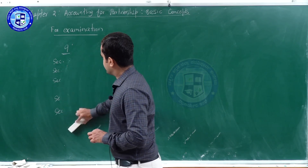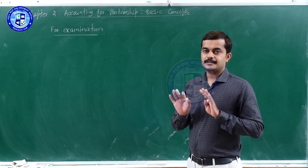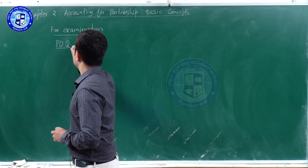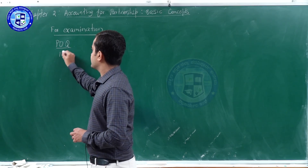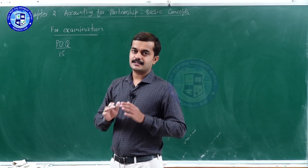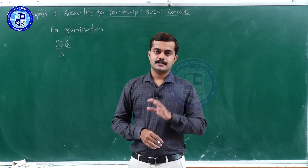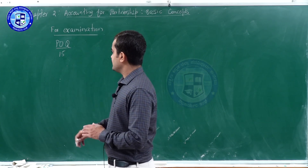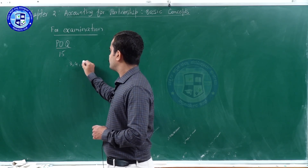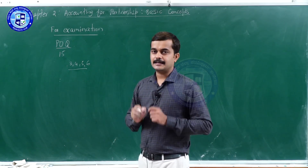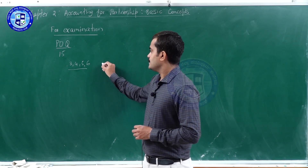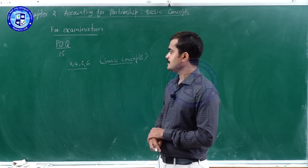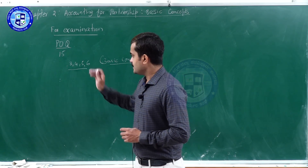After looking at all these different sections, we will now go to practical oriented questions. There are a total of 15 practical oriented questions which can be asked from all chapters in the Second PUC Accountancy textbook. Questions number 3, 4, 5, and 6 are from this chapter — Accounting for Partnership Basic Concepts. Let us look at each question in detail.